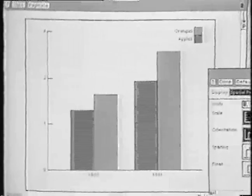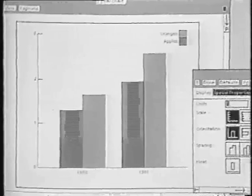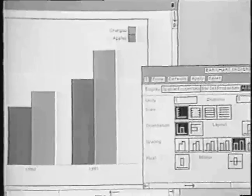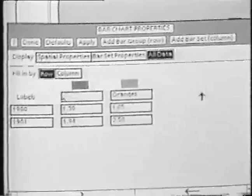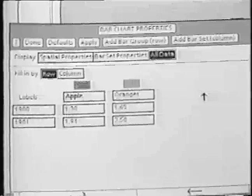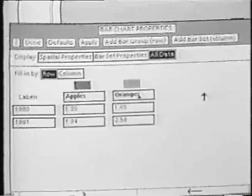We can also use the property sheet to change the data displayed by the bar chart. Here we can also alter the appearance of the labels to make these bold, for instance.